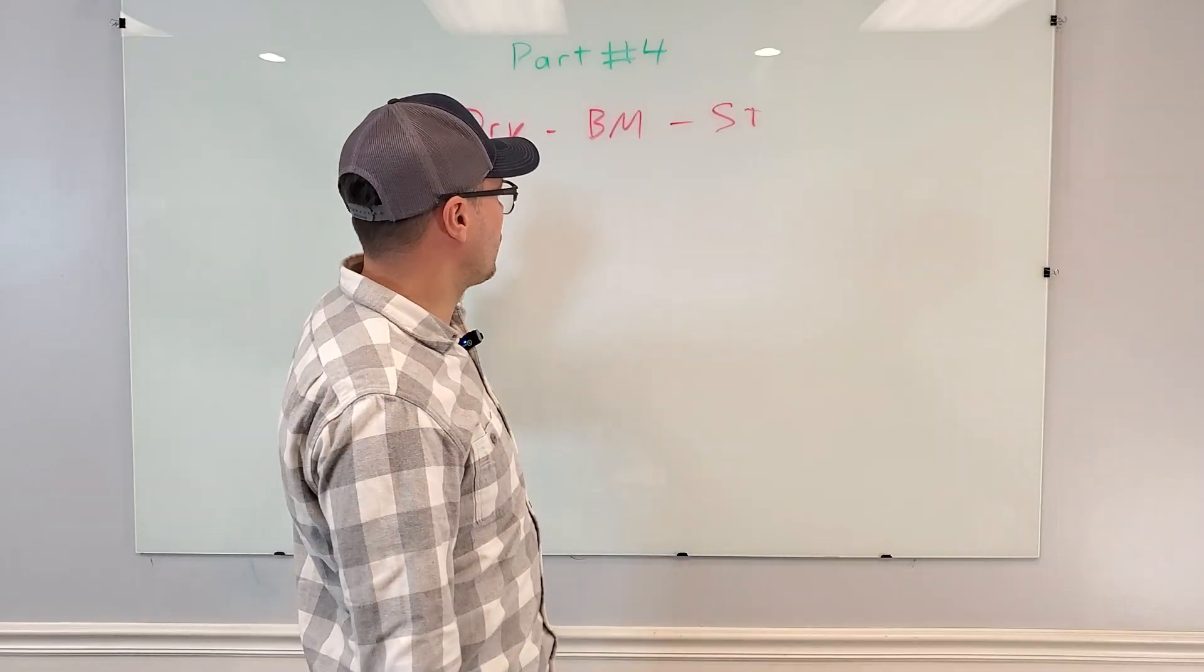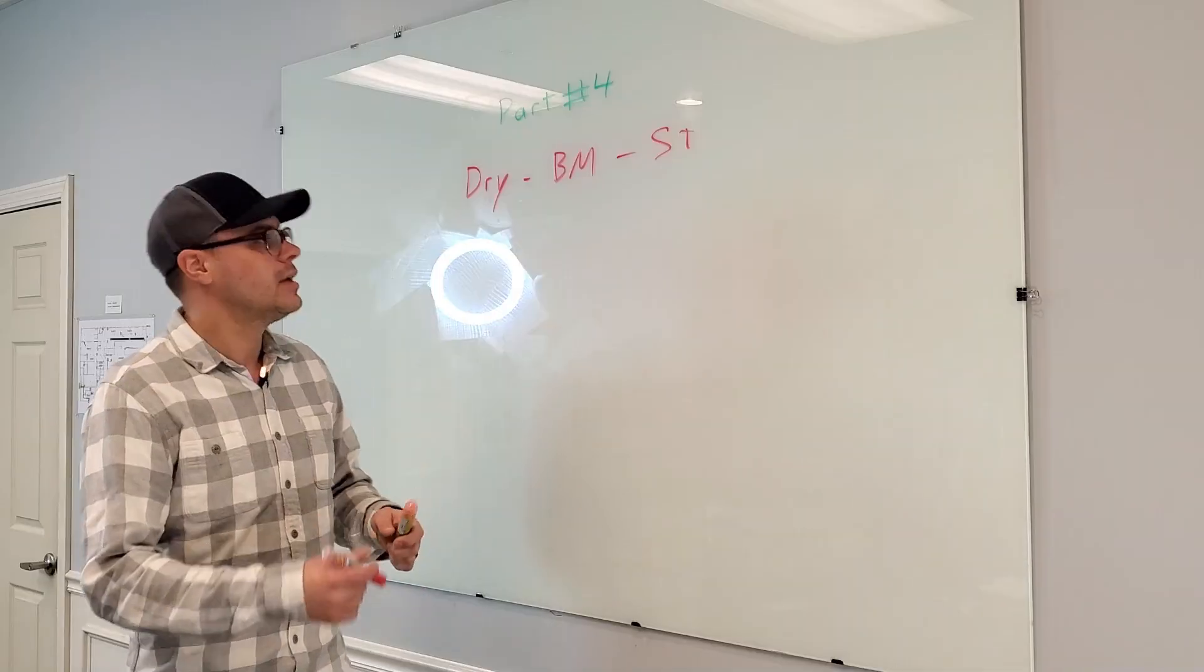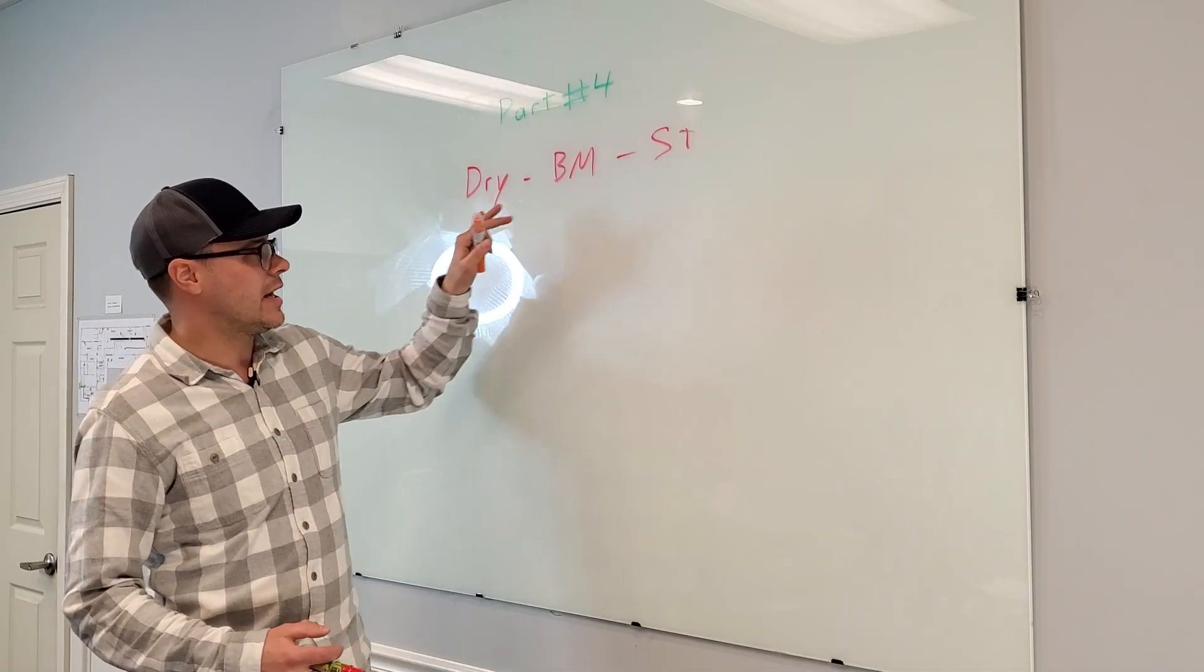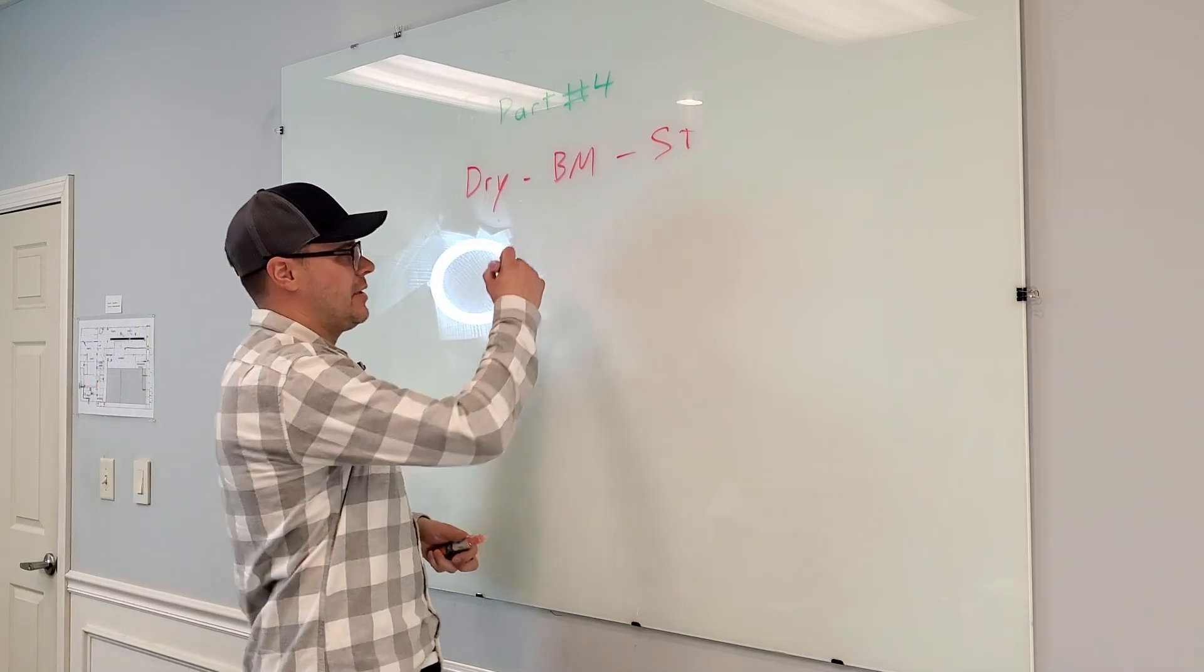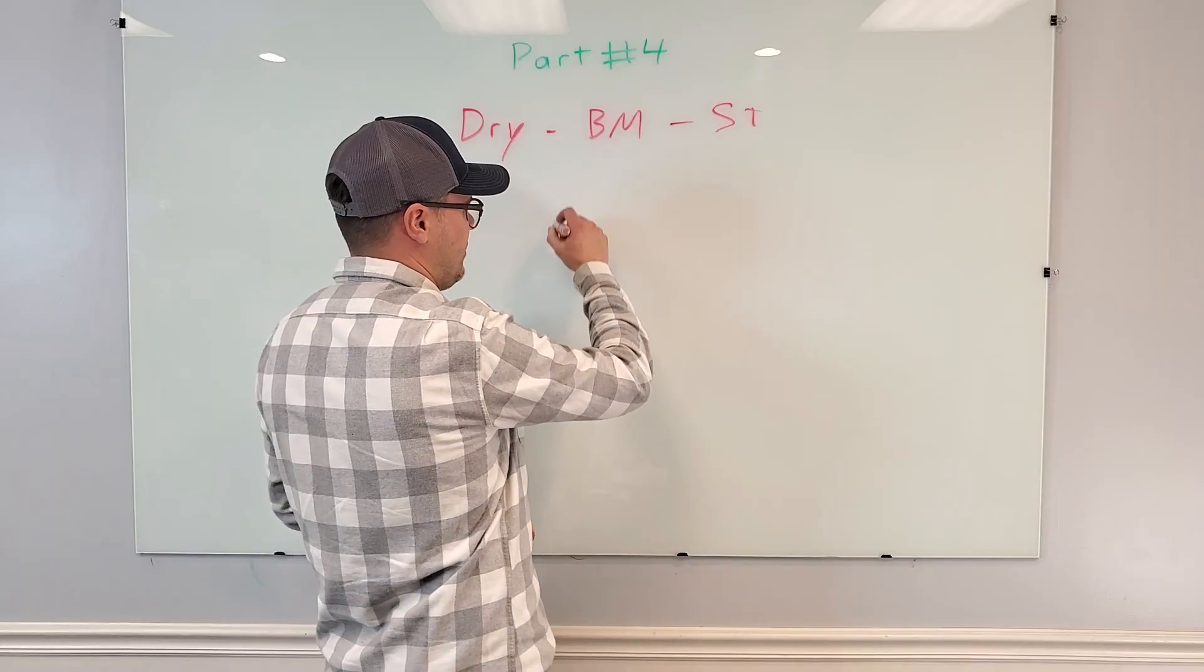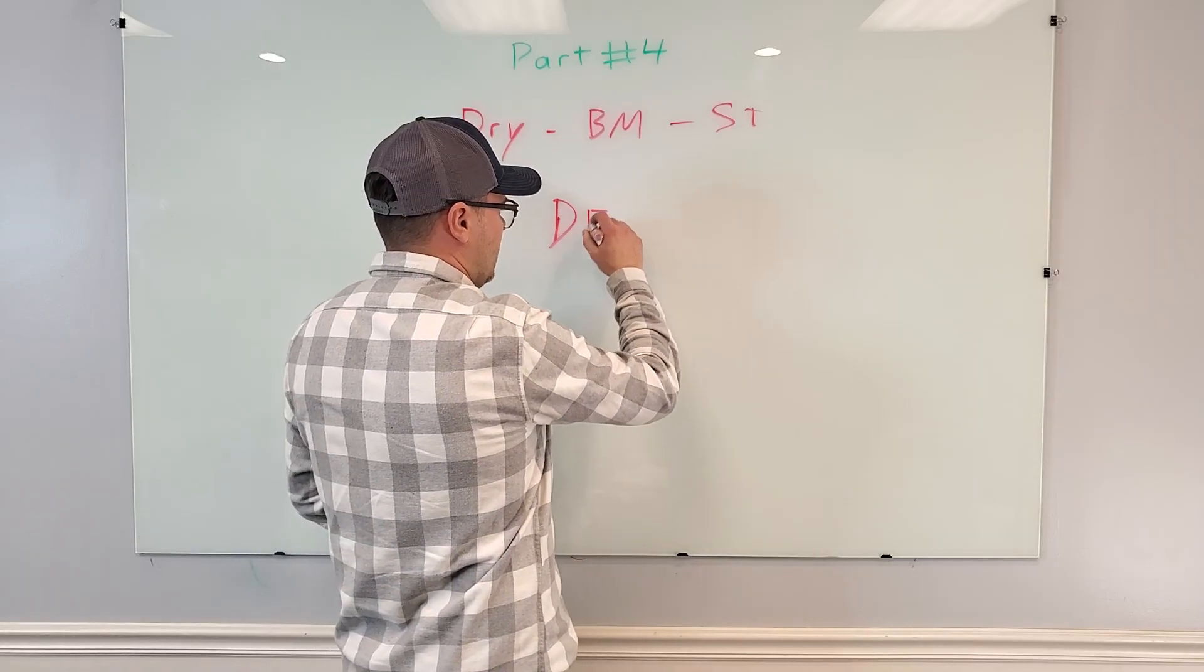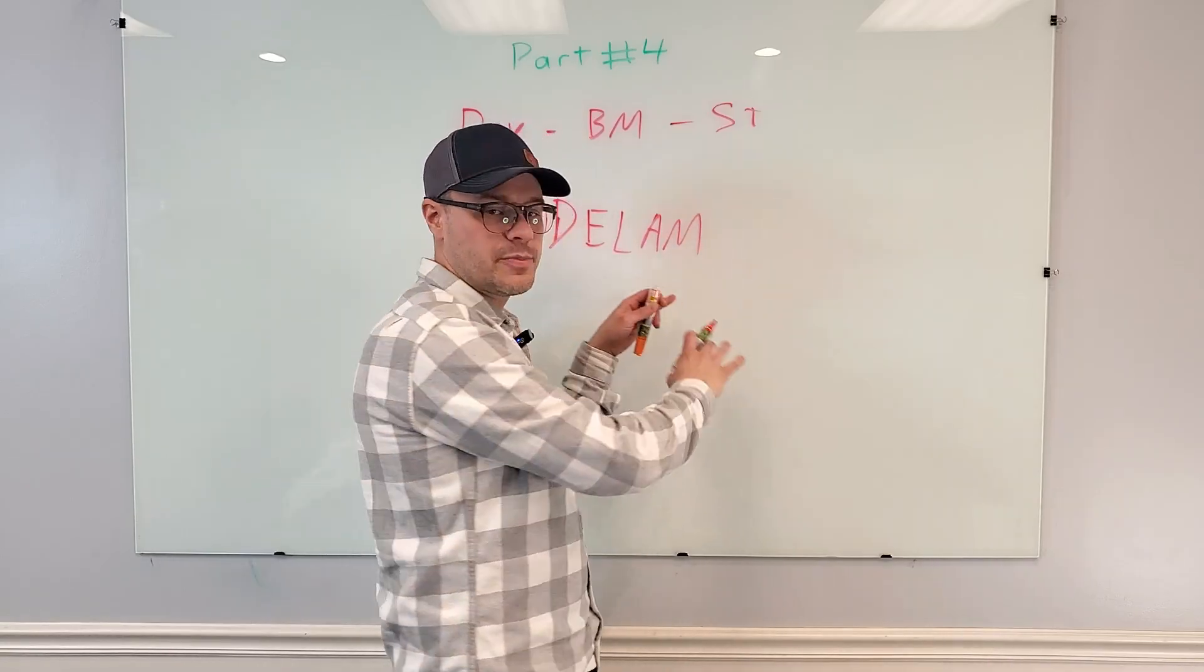So today we're going to talk about the next step. In our last one, we got dry black mass, we got our steel, and then we went into the delamination mill dosing hopper. So now we're going to talk about after the delam mill, what do we do from this point on.